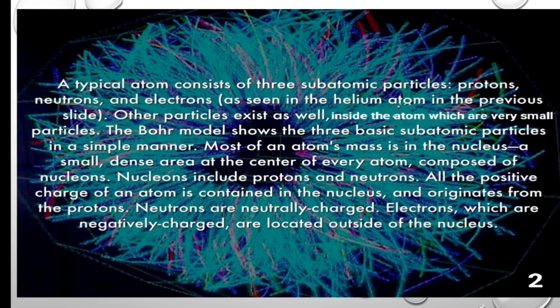Other particles exist as well inside the atoms which are very small. The Bohr model shows the three basic subatomic particles in a simple manner. Most of an atom's mass is in the nucleus which is a small dense area at the center of every atom. Nucleons contains the protons and neutrons. All the positive charge of an atom is contained in the nucleus and originates from the protons because they are positively charged particles. Neutrons are neutral.